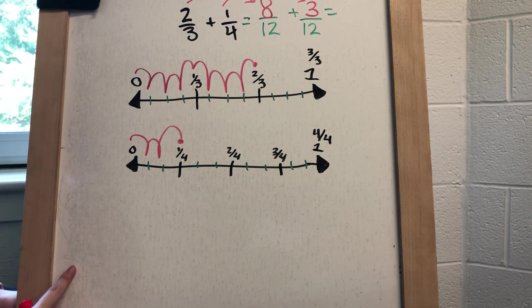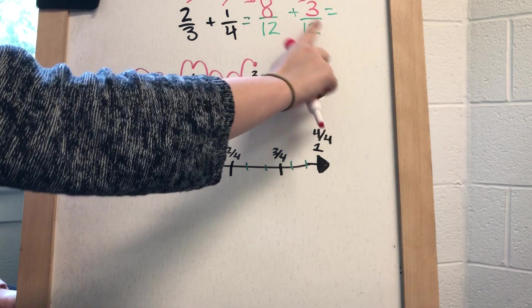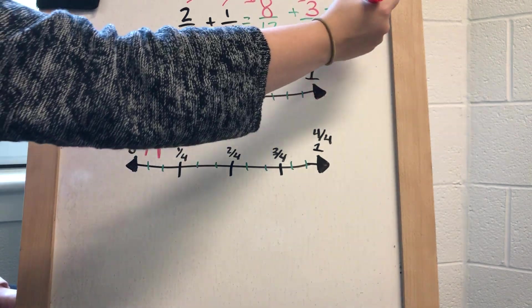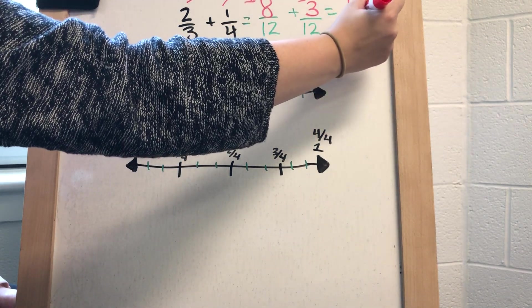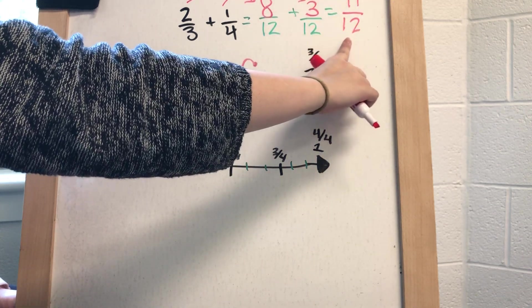So I'm going to combine these hops. I can either add up here and say 8 plus 3 is 11, and my numerator becomes 11 and my denominator stays the same as 12.